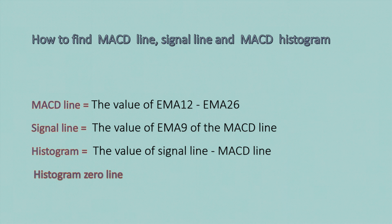The MACD line is mathematically obtained by subtracting the value of EMA26 from the value of EMA12. As a result, MACD turns the two moving averages into a momentum oscillator, which in turn offers the best of both trend-following and momentum indicators.